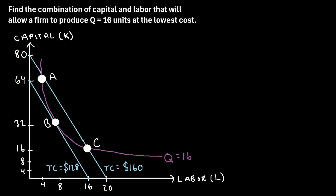In this video, I will explain how to find the cost-minimizing combination of capital and labor given an iso-quant line and iso-cost lines. So let's consider the following example: find the combination of capital and labor that will allow a firm to produce Q equals 16 units of some good at the lowest cost.